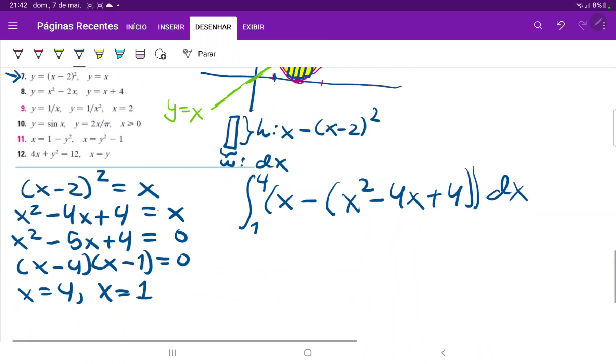So let's clean this up a little bit before we integrate. This is 1 to 4: minus x squared, and then minus minus 4x plus the x that's outside is plus 5x, and then minus 4 minus 4, all this times dx.